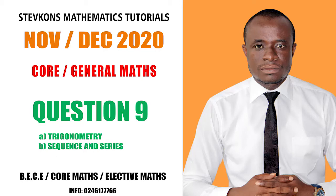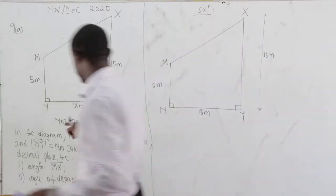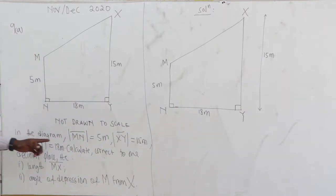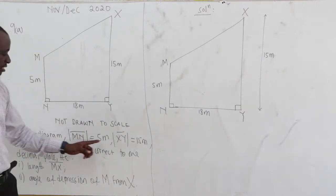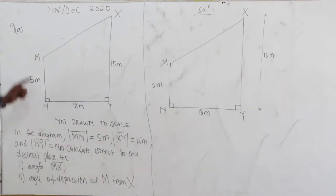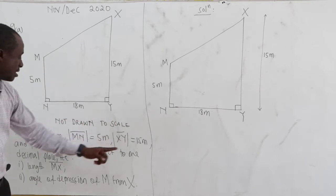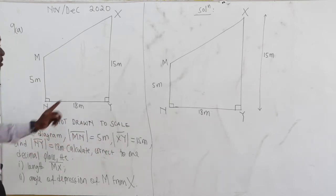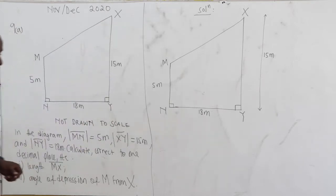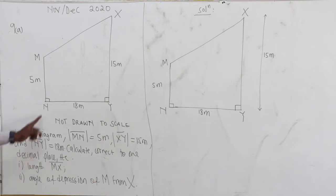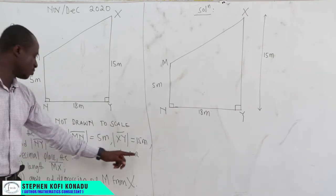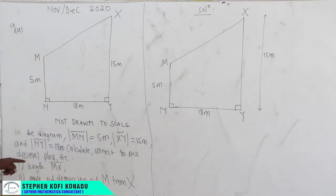Number 2020, question number 9a. This diagram is not to scale. In the diagram, MN is 5 meters, XY is 15 meters, and NY is 18 meters. Calculate correct to 1 decimal place: